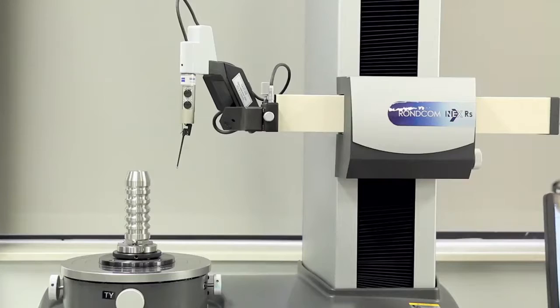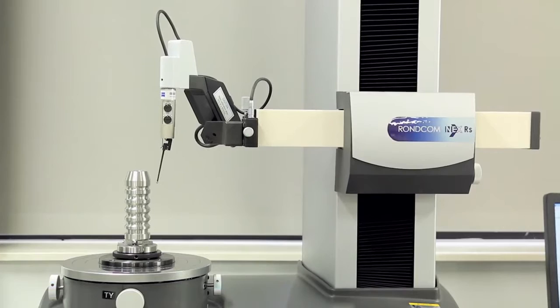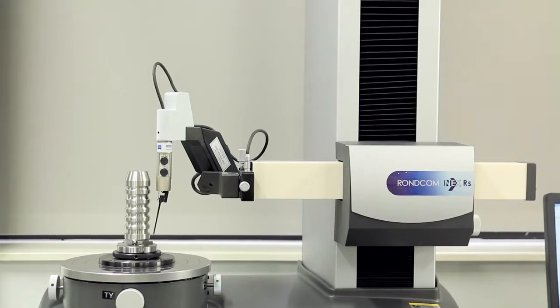From here we move into a part alignment. The Roncom Nex 100 is a manual alignment, but the Roncom Nex 200 and 300 series have automatic programmable alignment for centering and tilting with a wide range.